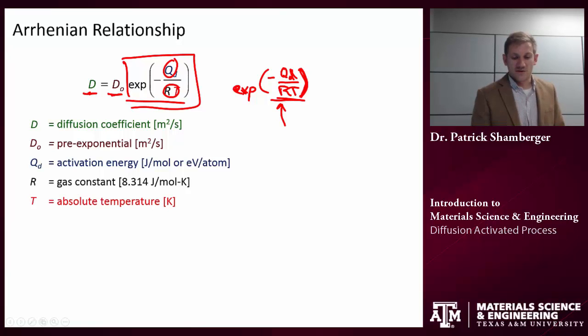The diffusion coefficient D is going to be proportional, so there's a pre-exponential constant, to the exponential of the activation energy over RT, where again, T is going to be the absolute temperature. So you have to make sure that this is in Kelvin scale. If you're using a Celsius scale or Fahrenheit scale, you're going to get a wrong answer. This always needs to be in terms of an absolute temperature.